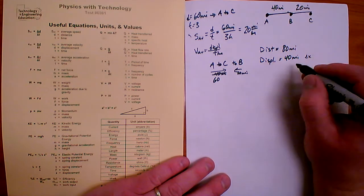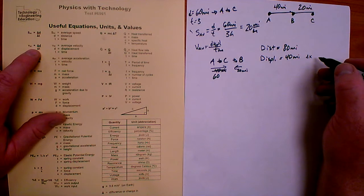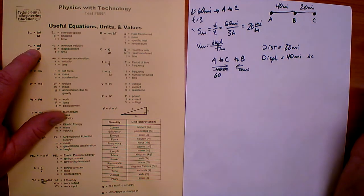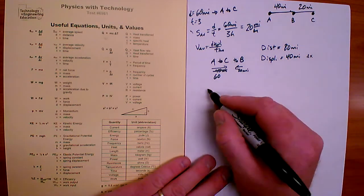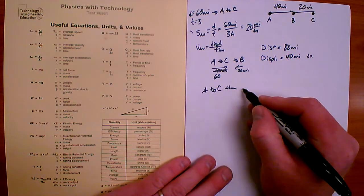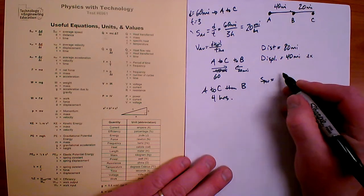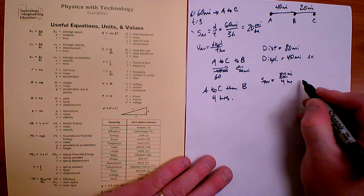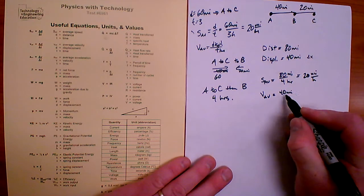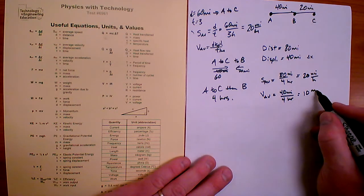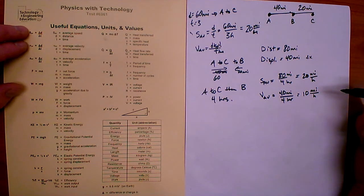In class we use delta x for displacement, which is final position minus starting position. If the trip from A to C to B took four hours, the average speed is distance over time: 80 divided by 4 is 20 miles per hour. Average velocity is displacement over time: 40 miles divided by 4 hours is 10 miles per hour. Know the difference between distance and displacement to find average speed versus average velocity.